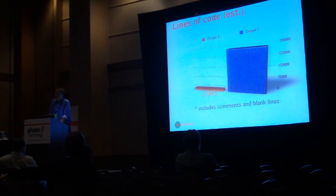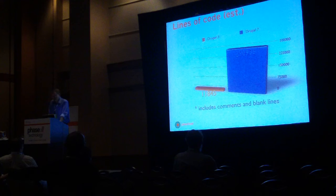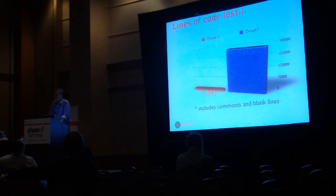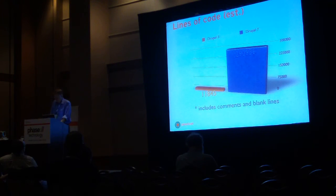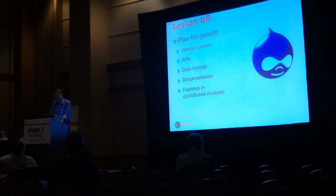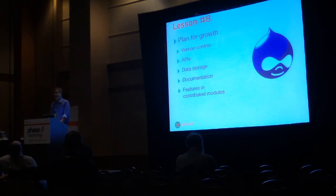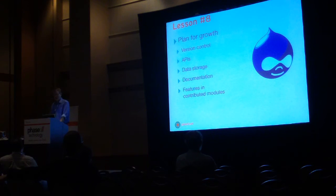Lines of code — this includes comments and other things, I actually grepped this on the command line — 11,000, almost 12,000 lines of code in Drupal 3; 291,000 lines of code in Drupal 7. Lesson number eight from all this: you have to plan for growth. You have to put systems and things in place, even for your own local development or business, because if you take on Drupal, you're going to have to watch these things.